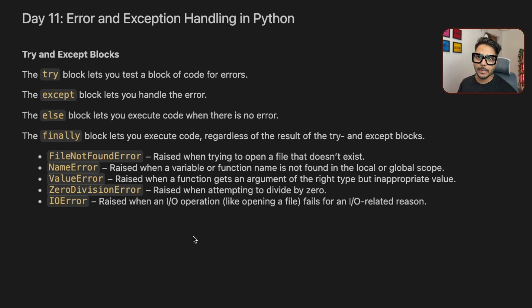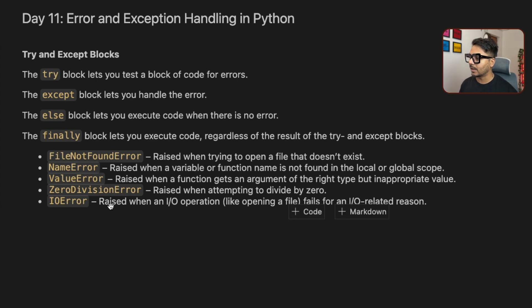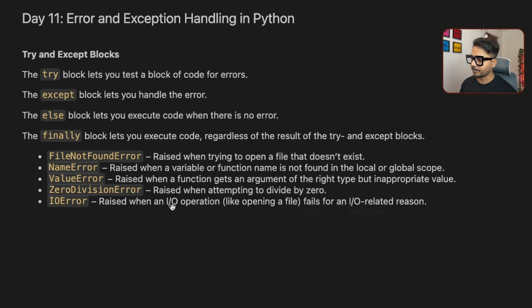Here I have added some common types of errors. The first one is FileNotFoundError — if the file name or file path doesn't exist we can handle it using FileNotFoundError. Then we have NameError, which occurs if a variable name is not defined. Then we have ValueError, ZeroDivisionError, and IOError. IOError gives you an error while opening or closing a file if you make a mistake.